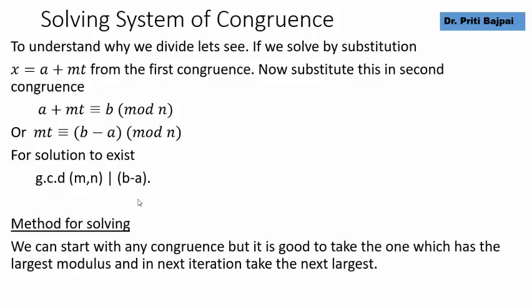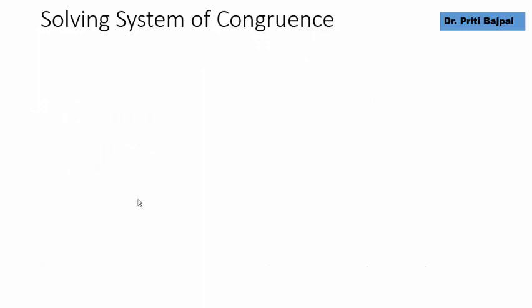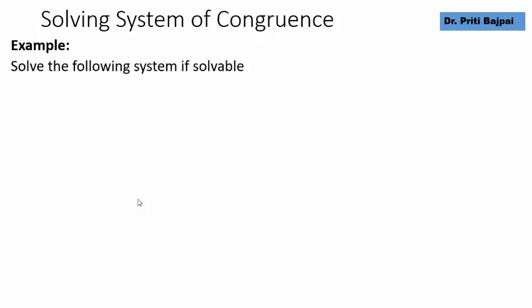As we saw, the method for solving such congruences is iterative in nature. We start with any congruence, but it is best to begin with the one that has the largest modulus, as this helps reduce calculations. We then step by step incorporate each congruence, moving from the largest modulus to the next largest and so on. To explain this, let's take an example.